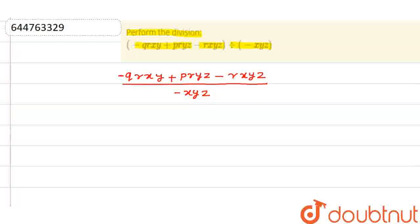Now, separate all these positive and negative terms. So, this is minus QRXY divided by XYZ, okay, XYZ plus PRYZ upon minus XYZ.